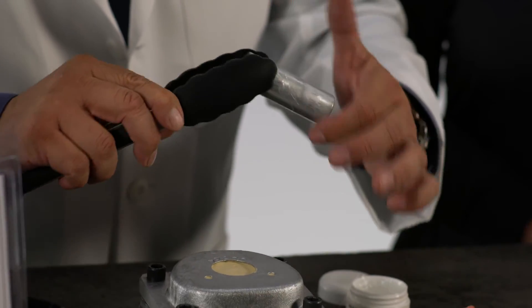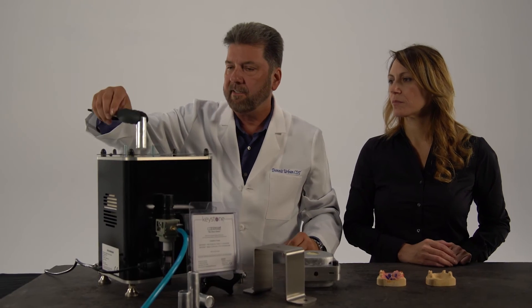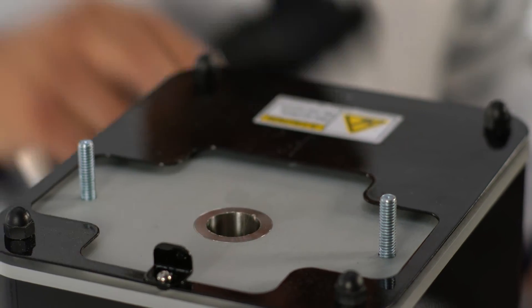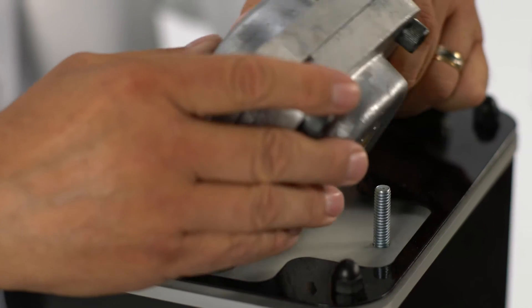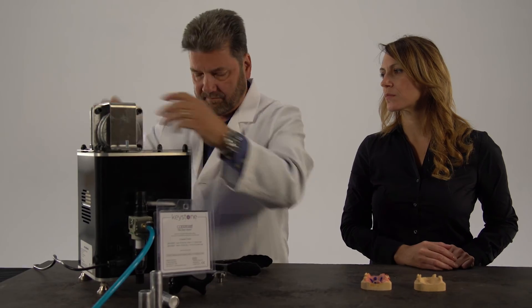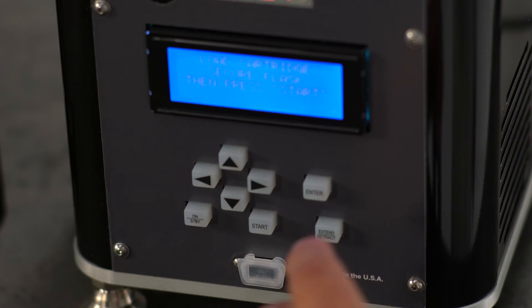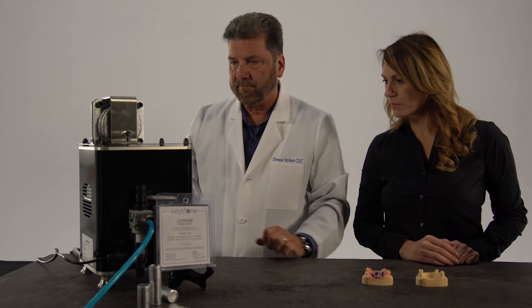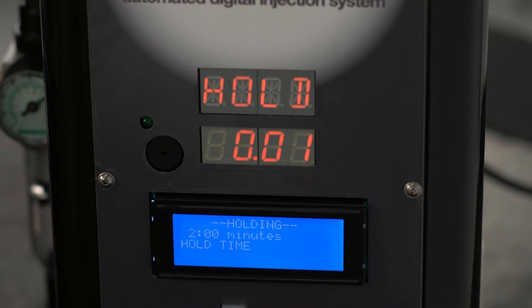Lubricate tube with a release agent and place tube into the FlexPress. Next, place the flask onto the FlexPress and secure the flask strap and tighten bolts, and then press start. The FlexPress will heat up the tube and inject the clear mat material after 16 minutes.